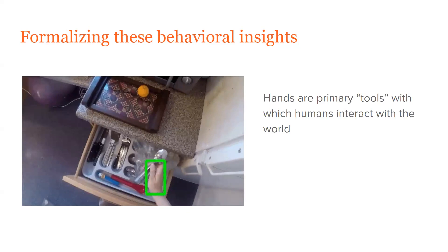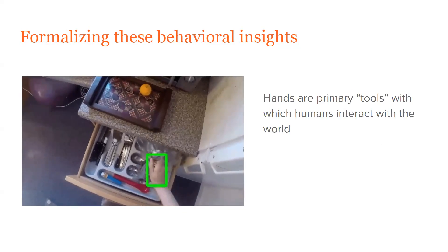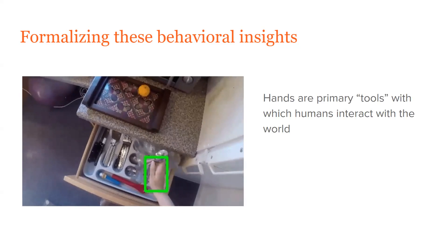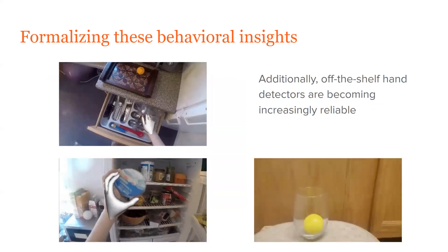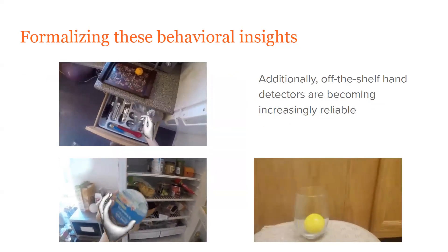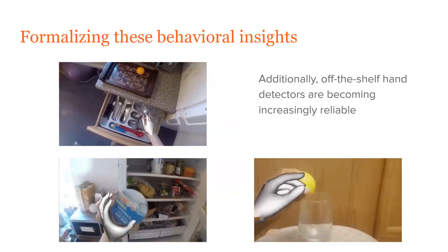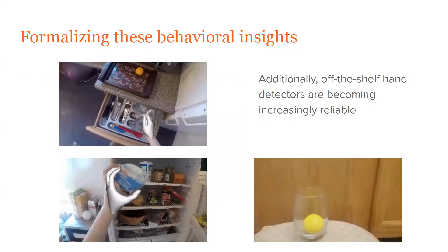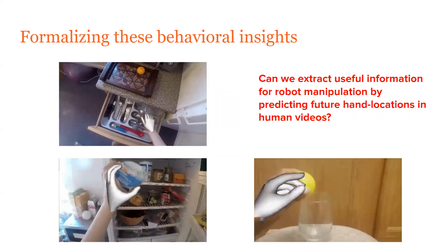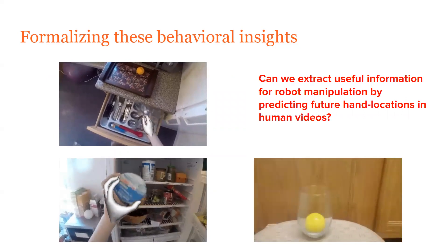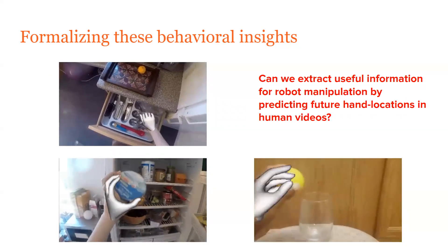To do this, we note that hands are the primary tools with which humans interact with the world. Additionally, off-the-shelf hand detectors are becoming increasingly reliable at detecting hand pose in different frames of a video. Based on this, we ask: can we extract useful information for robot manipulation by predicting future hand locations in human videos?